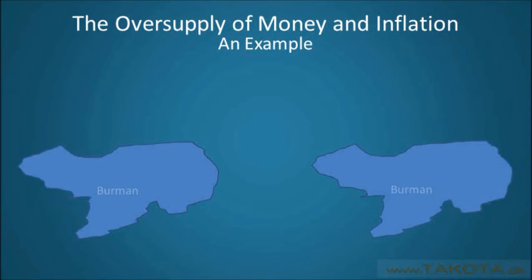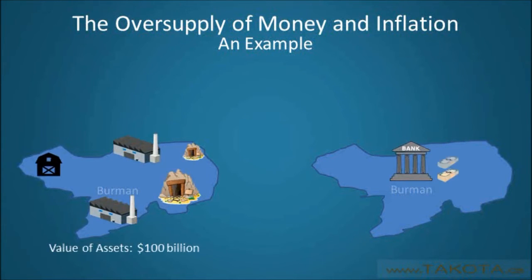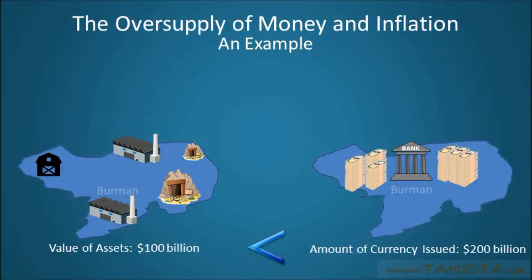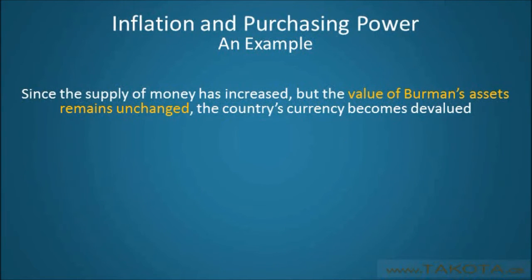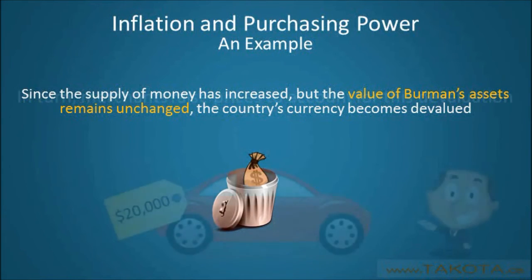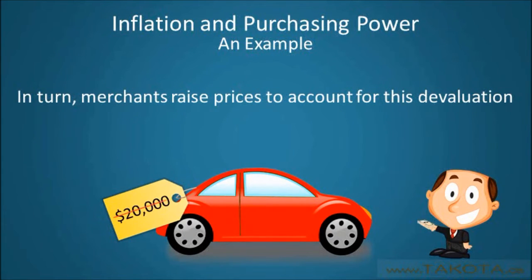But why have prices increased? While the causes of inflation are complex and multi-dimensional, inflation is usually associated with a country printing more money than it has assets. Consider the case of the fictional country of Burman, which prints $200 billion in currency, despite only having assets in the amount of $100 billion. When a country prints more money than it's worth, its currency is devalued, and in turn, merchants raise prices to account for this devaluation. This increase in prices decreases purchasing power.